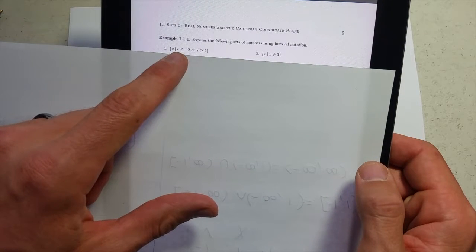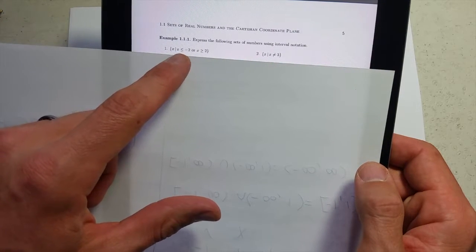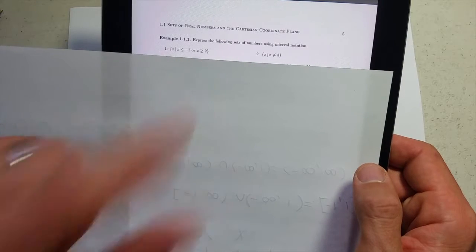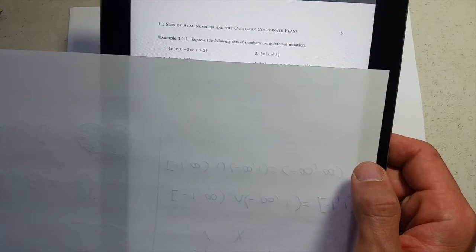Alright, x is greater than or equal to negative two, or less than or equal to negative two, or greater than or equal to two. So write out a number line and figure out exactly where that starts and ends and what's included.